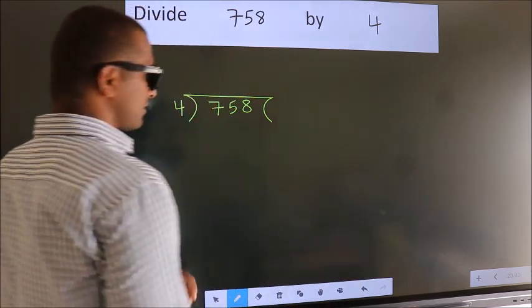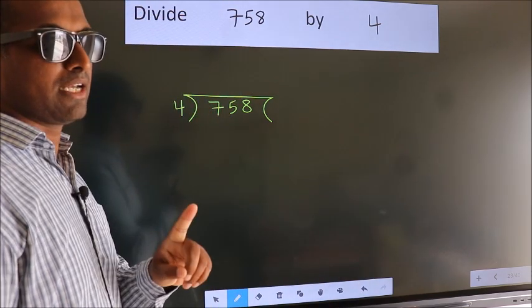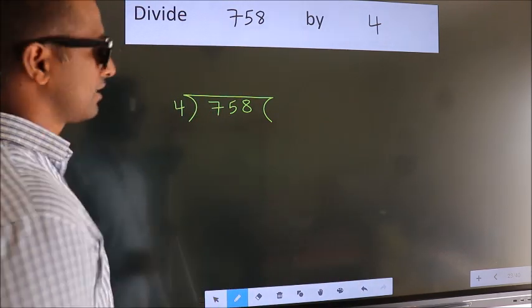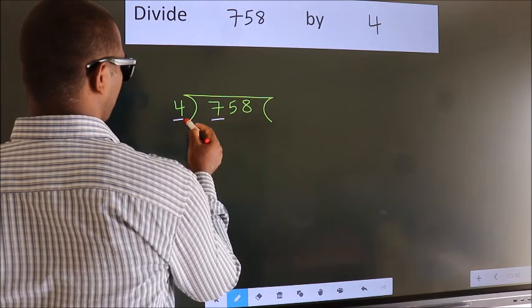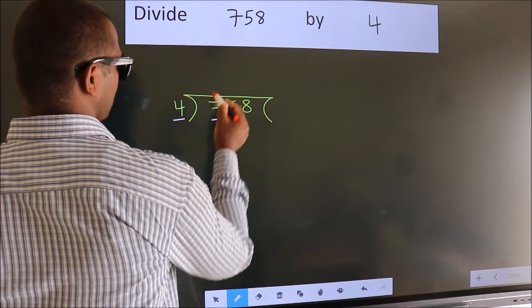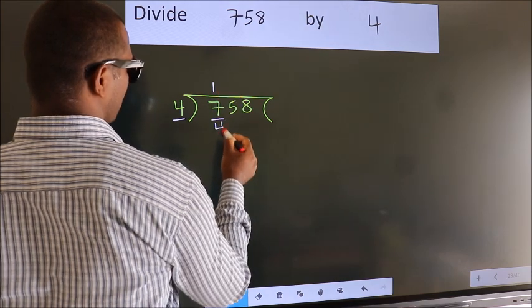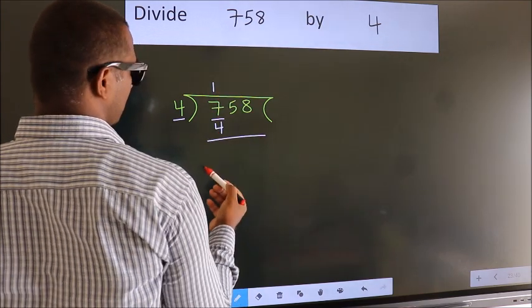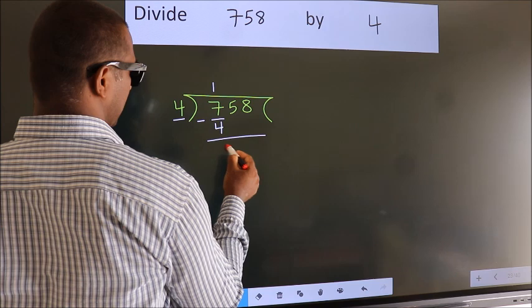This is your step 1. Next, here we have 7, here 4. A number close to 7 in the 4 table is 4 once is 4. Now we should subtract, we get 3.